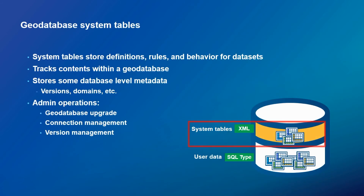When we talk about geodatabase, we talk about two distinct sets of tables. The first is the geodatabase system tables, or what we call repository tables, which contain metadata about your data. It also stores information maintained at the workspace level, which applies to all datasets within your workspace, like version domains. Some administrative operations on those include the geodatabase upgrade, managing your connections, and version management.